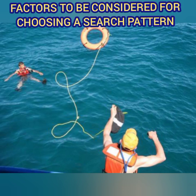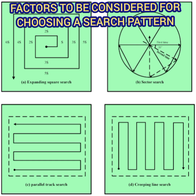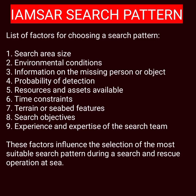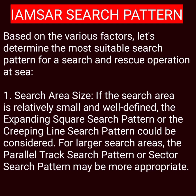Man overboard, man overboard. Hello friends, welcome. In this video I will share all the important factors that are to be considered when making a choice of the search pattern. Here are the nine factors: number one, search area size; number two, environmental conditions; number three, information on missing person or object; number four, probability of detection; number five, resources and assets available; number six, time constraints; number seven, terrain and seabed features; number eight, search objectives; number nine, experience and expertise of the search team.